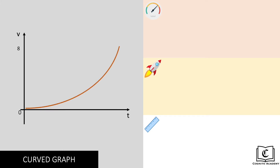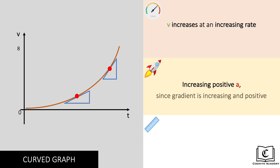Now that we are done with straight line velocity-time graphs, let's move on to curves, where gradient and hence acceleration isn't constant anymore. We can see from this graph that velocity is increasing from 0 to 8 meters per second, but at a non-constant increasing rate. Looking at the gradient, it is becoming steeper and pointing upwards, hence gradient is increasing and positive, and so is acceleration. Displacement is also positive since the area under the graph is positive.